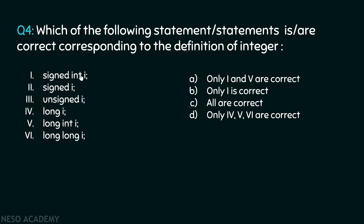Let's consider the next question: which of the following statements is/are correct corresponding to the definition of integer? We have to determine which statements are correct. The first interpretation — signed int i — is correct; this is the actual definition of a signed integer. You can write int i or signed int i; both are the same, where int is the data type and signed is the modifier.